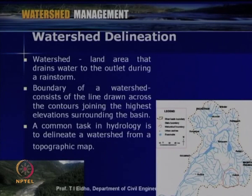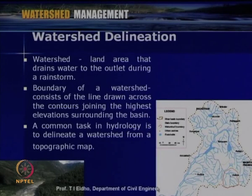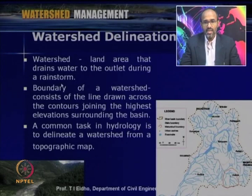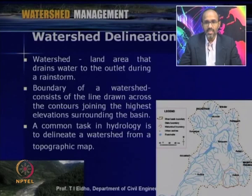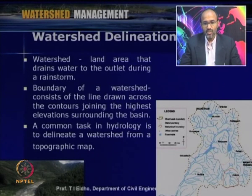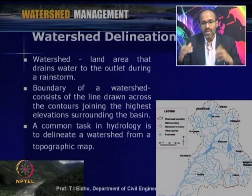As we have already seen in the previous lectures, a watershed is a land or an area that drains water to the outlet during a rainstorm. For a given area, village, or thaluk, we have to identify the watershed before going for various interventions or before starting watershed management or while preparing watershed management plans. We have to identify the exact boundaries of the watershed — that process is called watershed delineation.